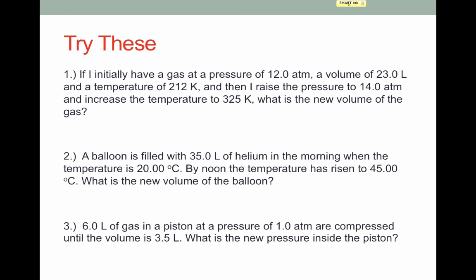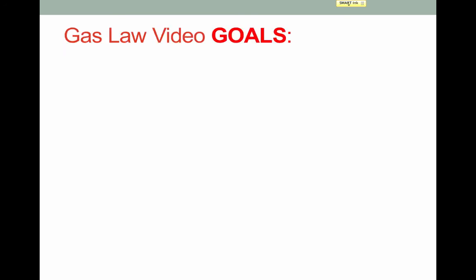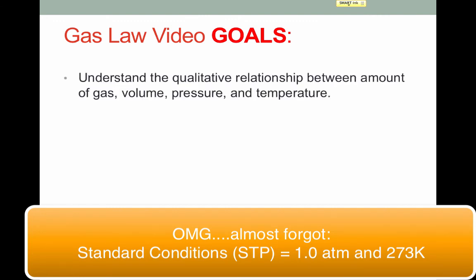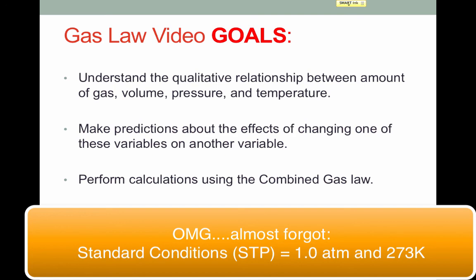Here are some problems to try on your own. Be sure to isolate your variables first by circling or underlining them, and make sure to check for proper sig figs and units on your final answer. Pause the video and try some or all of these. Here are the solutions to the previous problems. That brings us to the end of the gas law video. We looked at qualitative relationships between amount of gas, volume, pressure, and temperature, determining which were directly or inversely proportional. We made predictions about changing variables, and performed calculations using the combined gas law.